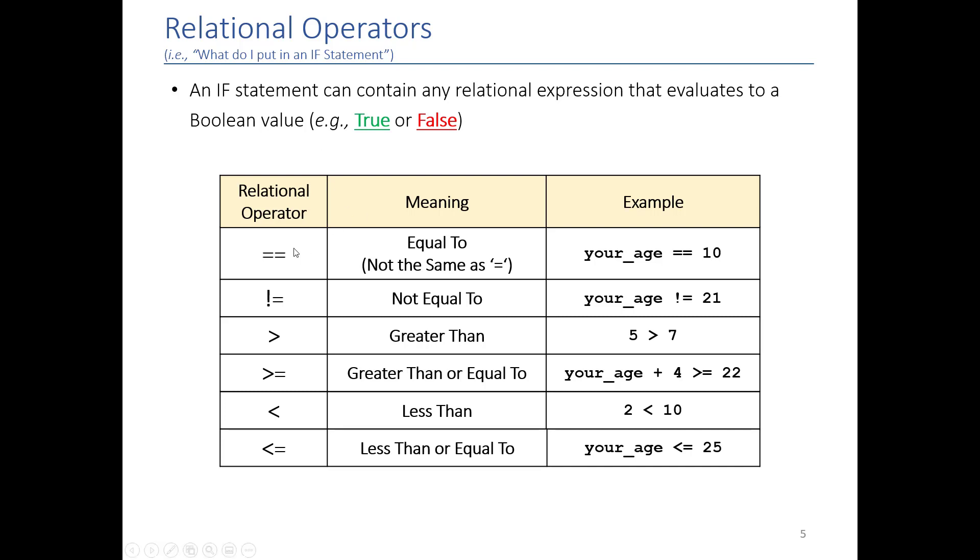So double equals is what we use in Python to say is something equal to each other, so is your age equal to 10. If you use a single equals, that's assignment, that's saying your age is assigned the value of 10. So everything we've done up to this point has been with the single equals, but when I want to compare two things I use double equals. The exclamation point in Python means not, so this is not equal to, so I can say if your age is not equal to 21 then do something.